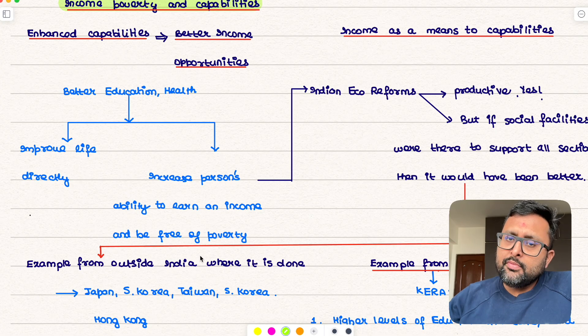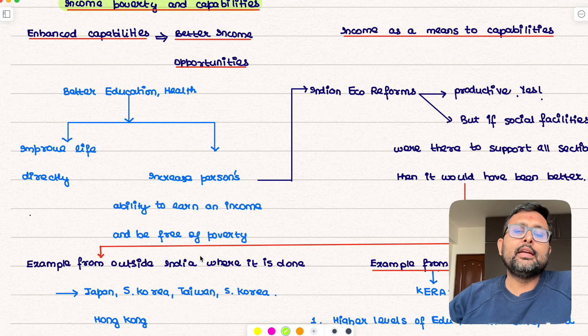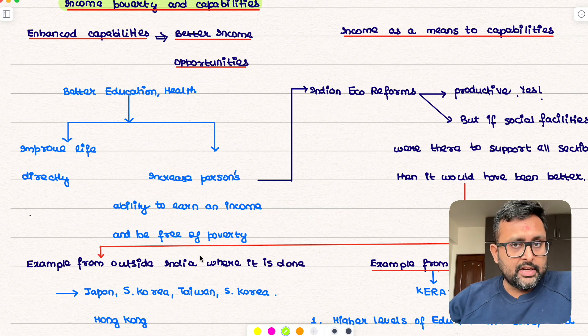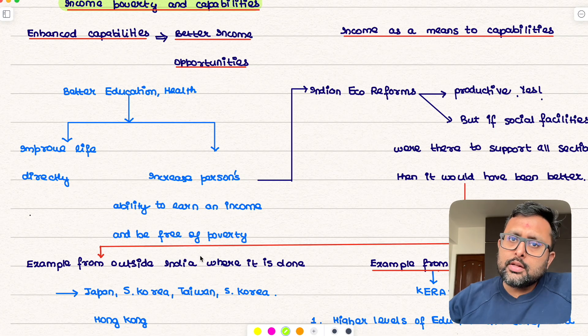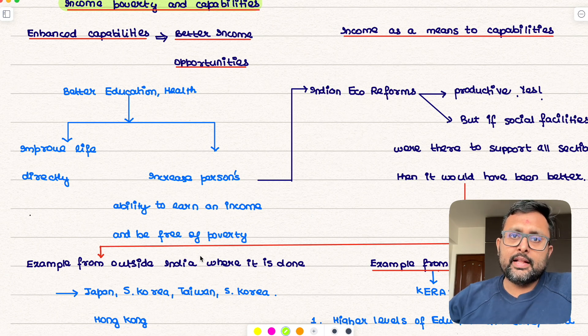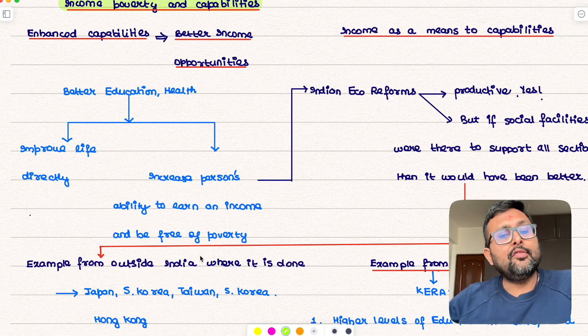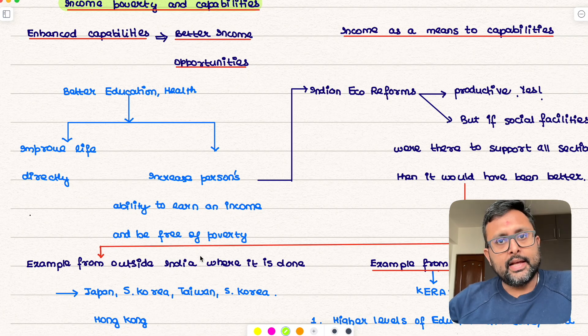Were reforms productive? Yes, and a resounding yes. But they could even have been better if government would have provided or made the social infrastructure better first. For example, if government would have provided to all sections of the society better education, better health, then naturally they will have improved capabilities and they would have even better earning capacity and hence the growth will occur naturally in the country.